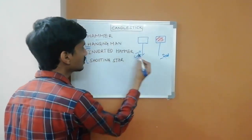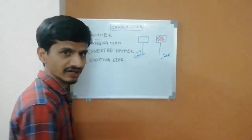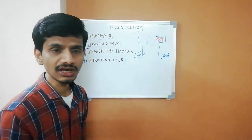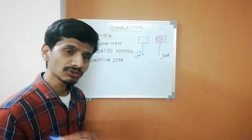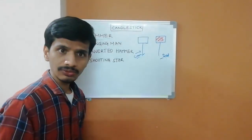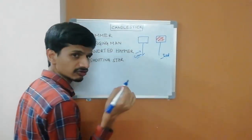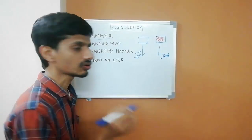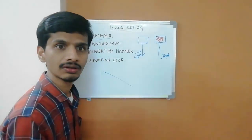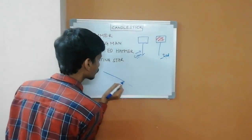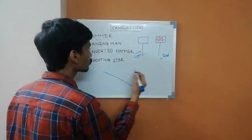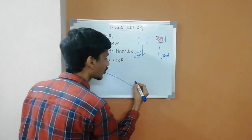This is a hammer candle. As I already said, this is a bullish candle. This bullish candle is used in a trading signal. So, this is a hammer candle. Let's say a stock price is moving in a downward direction — that means price is in a downtrend. The candle is moving downward direction, and in the last situation, a hammer candle forms.